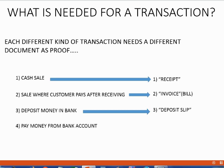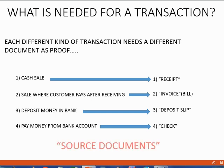If we pay money directly from the bank account and give it to someone, the proof of that transaction is a check. All of these documents that prove a transaction actually happened have a special name. These documents are called source documents, because they are the first place that the information about the transaction is recorded on.